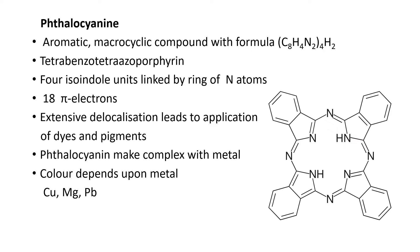Phthalocyanine is an aromatic macrocyclic compound with molecular formula C8H4N2, four times, H2. It is called phthalocyanine tetrabenzotetraazaporphyrin. It consists of 4 isoindole units linked by a ring of nitrogen atoms. In the central cavity of this structure, a metal is incorporated, bonded and complexed.